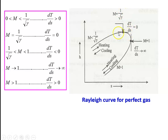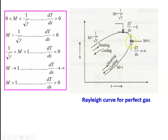The slope dT/dS = 0 corresponds to M = 1/√γ (the point of maximum temperature on the Rayleigh curve), and dT/dS → ∞ corresponds to M = 1 (the sonic point). On the curve: for M < 1/√γ, dT/dS > 0 (this portion of the subsonic branch); at M = 1/√γ, dT/dS = 0 (maximum temperature point); for 1/√γ < M < 1, dT/dS < 0 (small portion near sonic); at M → 1, dT/dS → ∞; and for M > 1, dT/dS > 0 (lower supersonic branch). For a perfect gas with γ = 1.4, the M value at maximum temperature is 1/√1.4 ≈ 0.845, allowing us to define the specific process regions.